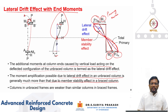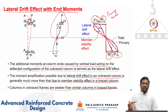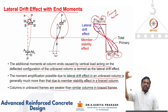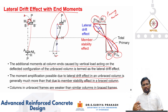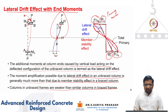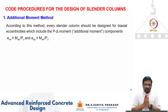Columns in unbraced frames are weaker than similar columns in braced frames because the amplification of additional moments is higher. Greater additional bending moment means the column fails at a slightly lower axial compression. This is why the code must account for this increased additional moment. The first method to account for it is the additional moment method.